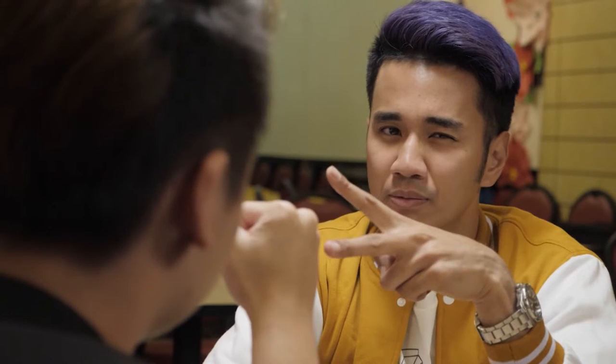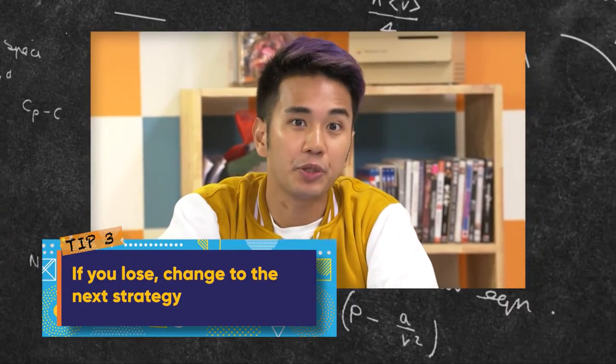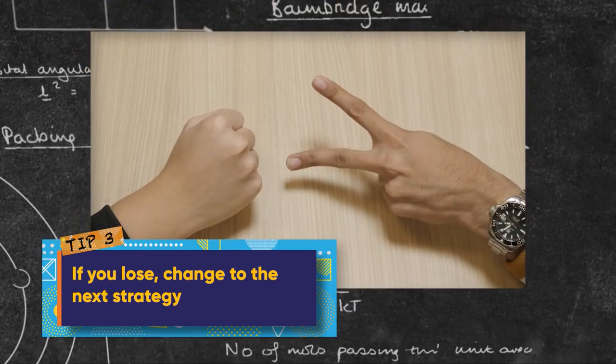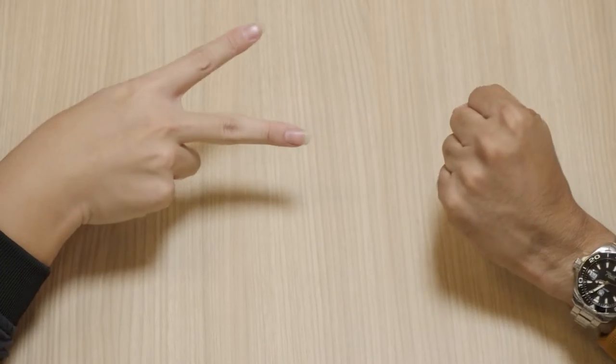But what do you change to? Let's say you put out scissors and got defeated by a stone. You know he's probably going to stick to stone since he won, so you go with paper. Or, if you put out paper and got defeated by scissors, he'll probably stick with scissors, so you should change to stone. Now, do you see tip three coming? Tip three: if you lose, change to the next strategy. If you played scissors, then play paper. If you played paper, then play stone. And if you played stone, then play scissors.